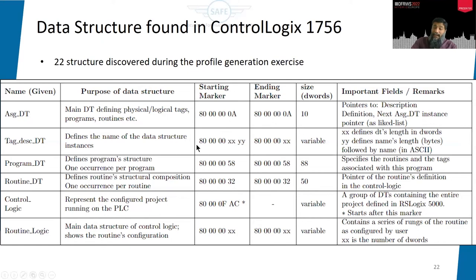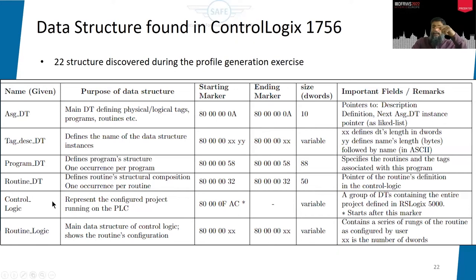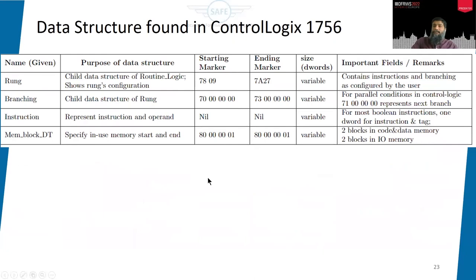The program data structure is a big structure of 88 DWORDs with some interesting fields from a forensic perspective. There is also a routine data structure, an interesting nested control logic structure. Additionally, there is a rung, branching, instruction, and memory block data structure — an interesting structure that tells us exactly how much memory is utilized, likely the same values reflected by the control software.